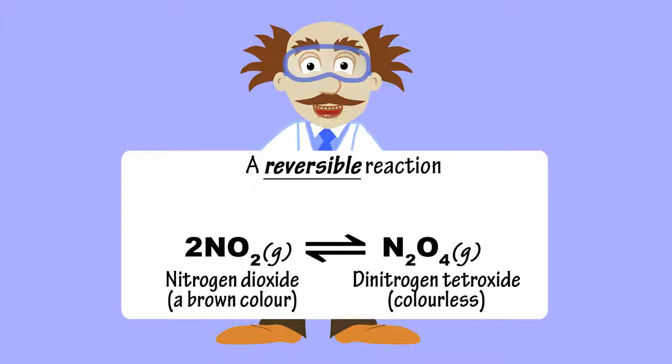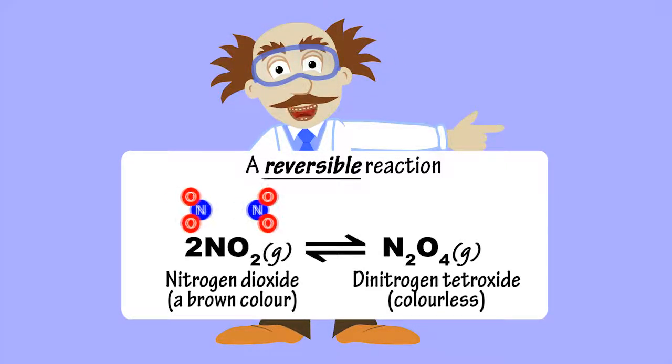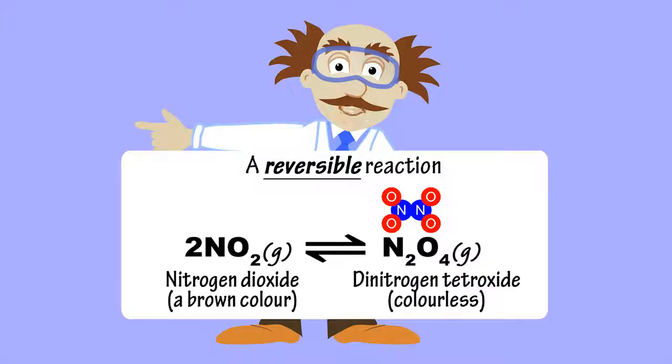This is an example of a reversible reaction, or a reaction that can move both in a forwards direction, with molecules of NO2 combining to form N2O4, and in the reverse, or back direction, with molecules of N2O4 disassociating to form NO2 again.